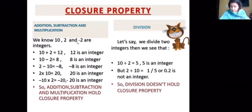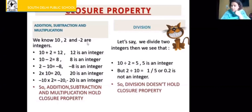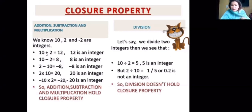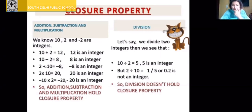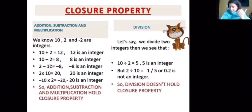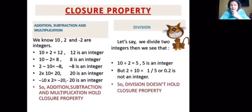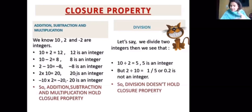For addition, subtraction, and multiplication we have closure property — they are closed. For example, 10 and 2 and minus 2 are integers. 10 plus 2 is 12, and 12 is also an integer. 10 minus 2 is 8 — yes, 8 is an integer. 2 minus 10 gives minus 8, and minus 8 is also an integer. 2 multiplied by 10 gives 20 — yes, 20 is an integer. Minus 10 multiplied by 2 gives minus 20, which is also an integer.